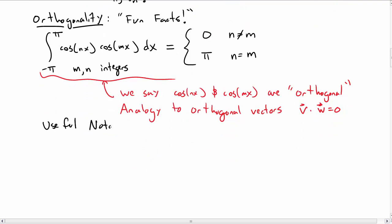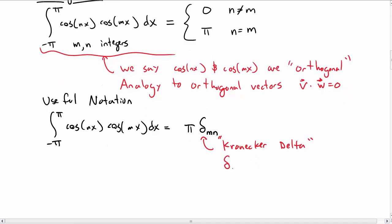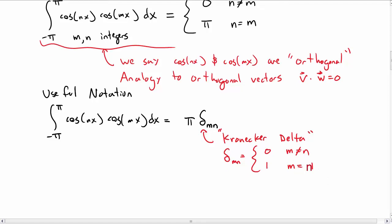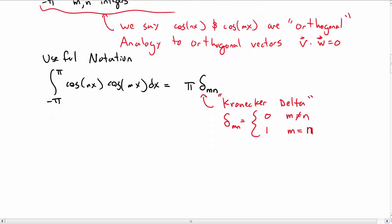So there's a useful notation that is sometimes used here. So let's rewrite this integral that we had above, cosine of nx, cosine of mx dx. Sometimes we write this as π times δₘₙ, where this delta here is a Kronecker delta. And what the Kronecker delta is, is it's a way of encoding this fact that it's zero if m is not equal to n, and it's one if m is equal to n. So that's going to be a useful way of writing this.